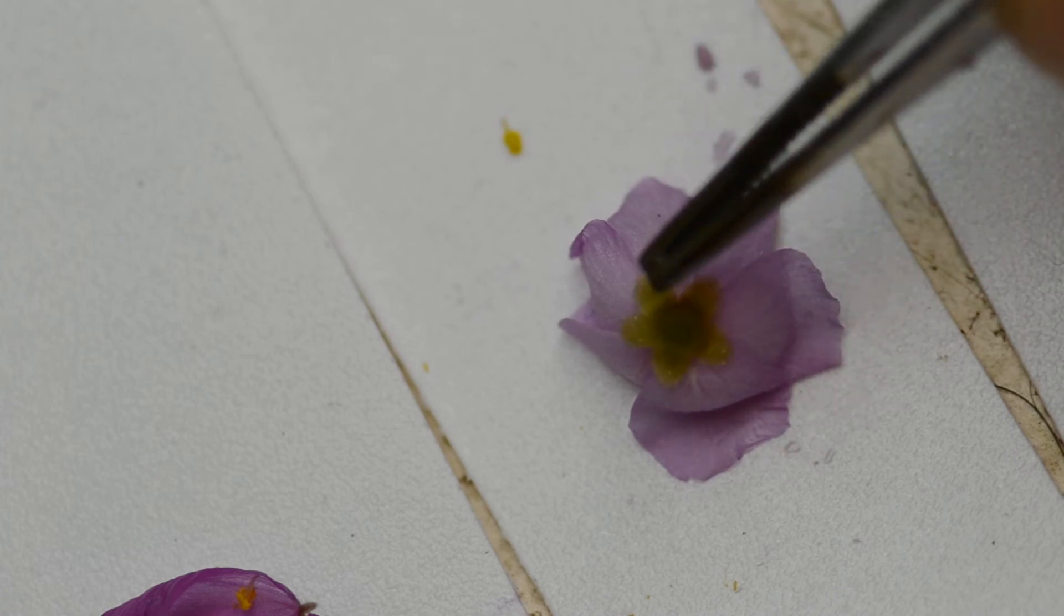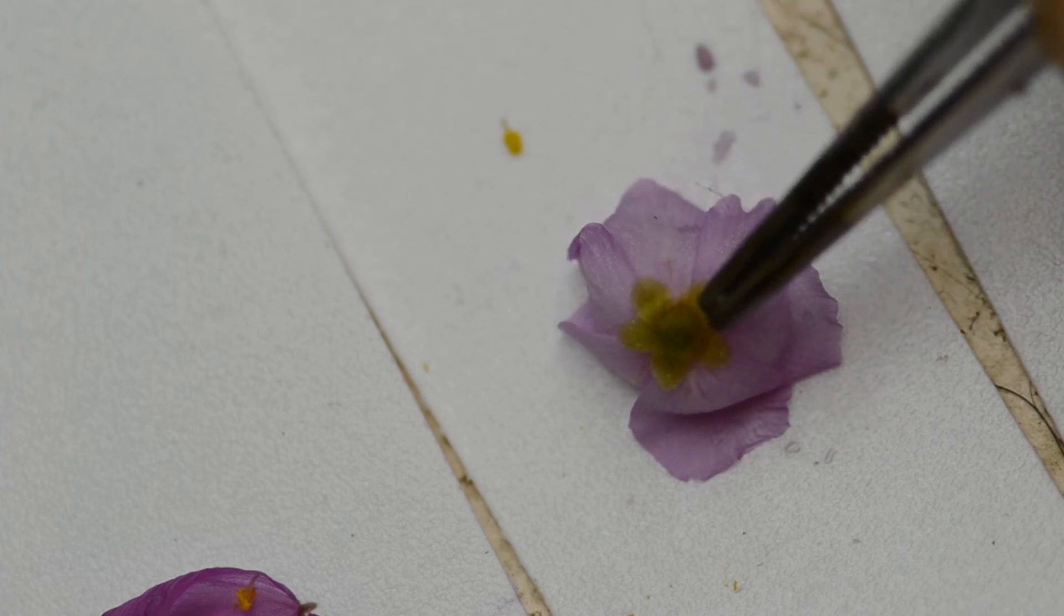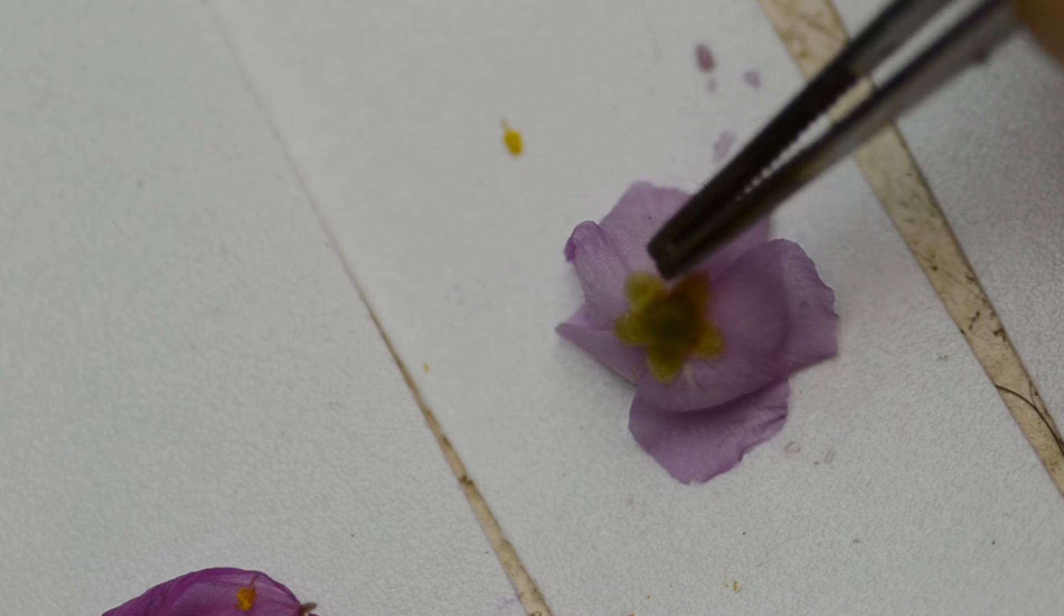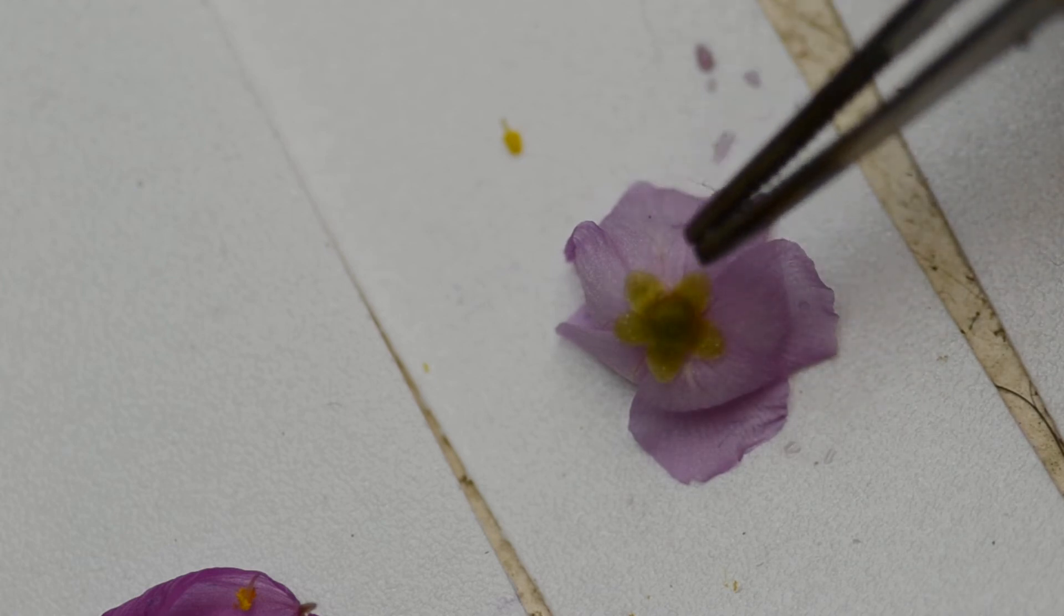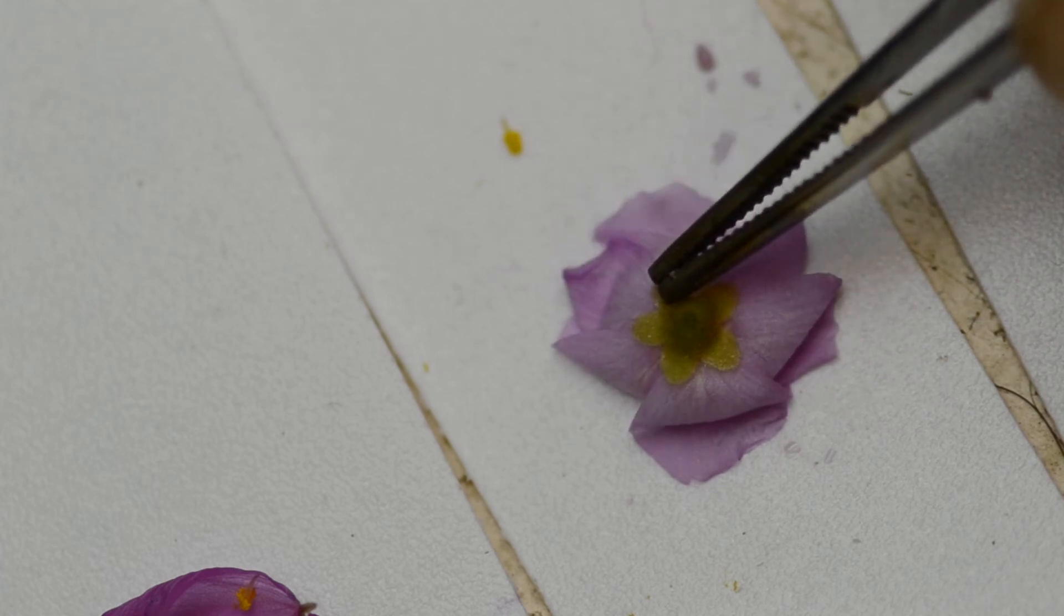And then on this bottom part of the flower, there's this lump. And that lump is the connection to the flower stalk, which is known as the peduncle, I believe. Kind of an odd name.